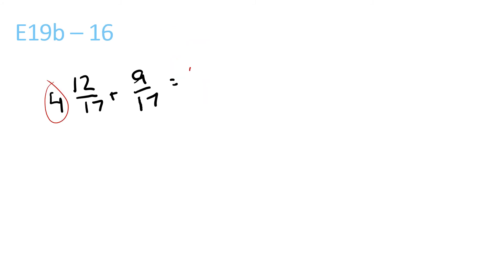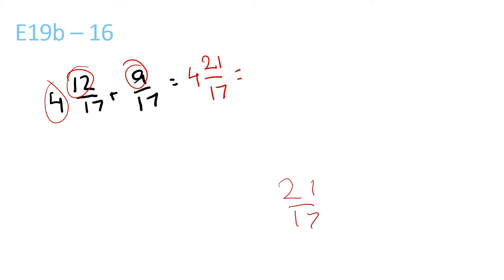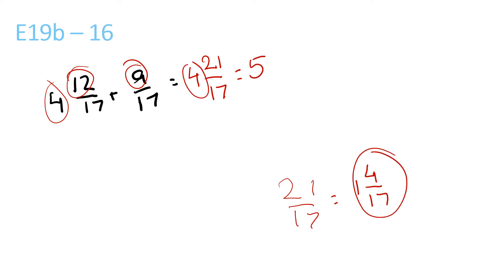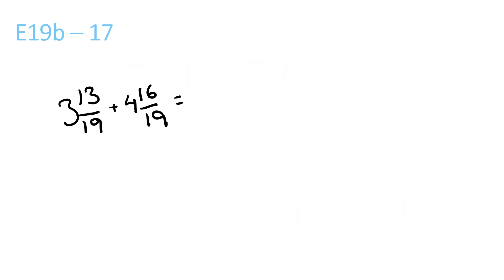4 plus nothing is 4. 12 plus 9 is 21 over 17, which — since the top one is larger than the bottom — 17 goes into 21 once with a remainder of 4 over 17. So 1 and 4 over 17 plus 4 is equal to 5 and 4 over 17. Lucky last question.